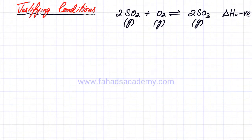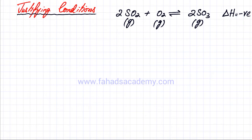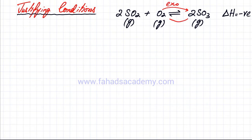We now need to justify the conditions used in step 2, which was the reversible reaction in which SO2 reacted with O2 to produce two molecules of SO3. Since it was at equilibrium, the rate of forward and backward reactions would be equal. The enthalpy change for the forward reaction is negative, meaning the forward reaction is exothermic — it releases energy — whereas the reverse reaction is endothermic.